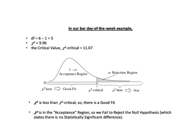In our bar day-of-the-week example, the degrees of freedom is 6 minus 1, or 5. The value of the test statistic chi-squared equals 9.96, and the critical value equals 11.07. So chi-square is less than the critical value — this means there is a good fit. Chi-squared is in the white acceptance region, not the shaded rejection region, so we fail to reject the null hypothesis. Recall that the null hypothesis said there is no statistically significant difference.